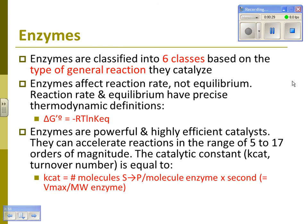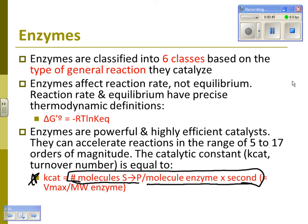The first thing you should really know is the definition of kcat: the number of molecules of substrate converted to product per molecule of enzyme per second. The other definition of kcat is Vmax over the molecular weight of the enzyme. Make sure you have those memorized — it will definitely be asked.